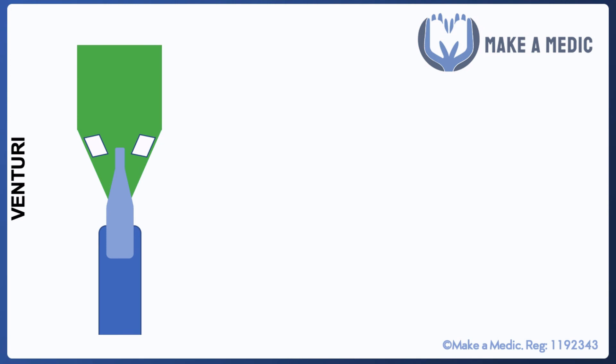Here we have a cross section of a venturi mask, and we will have a relatively low amount of oxygen flowing into the end of the venturi mask. The oxygen will then go through this narrowing, and as with any gas or liquid, as it passes through a narrowing it will speed up.